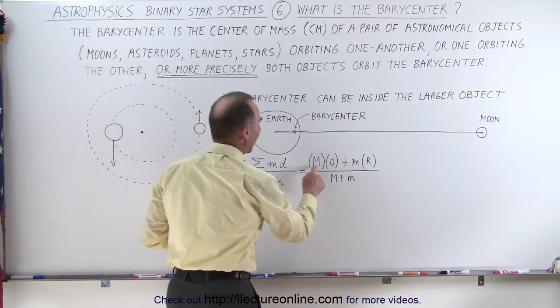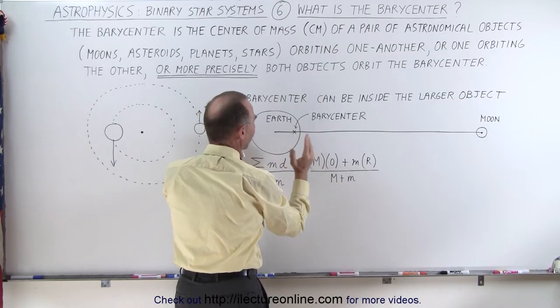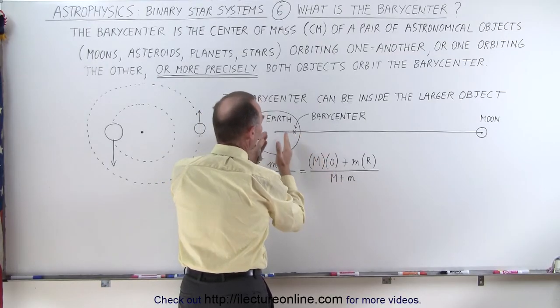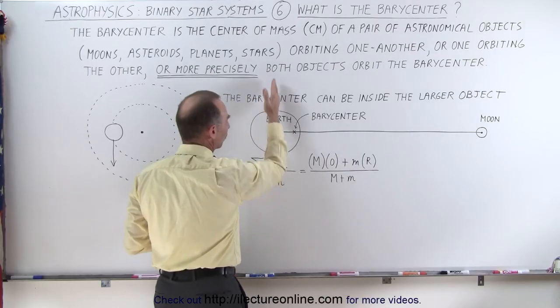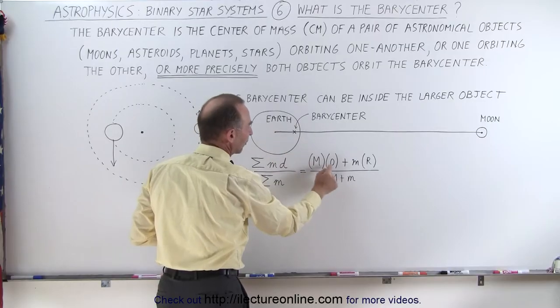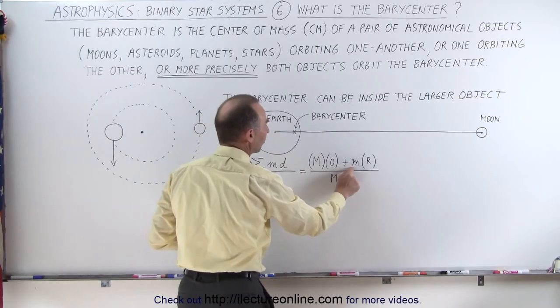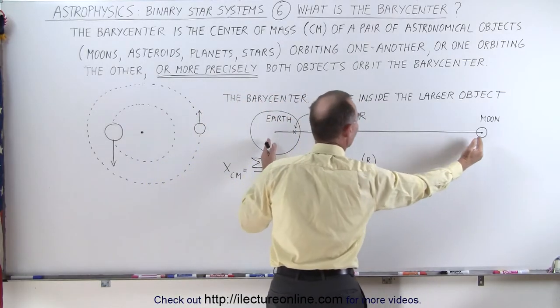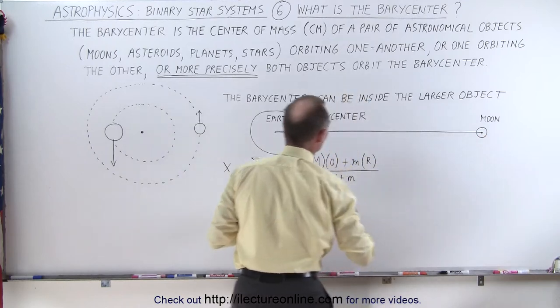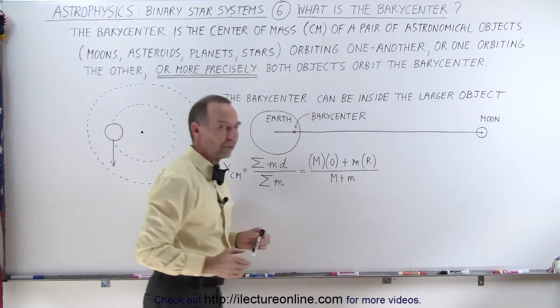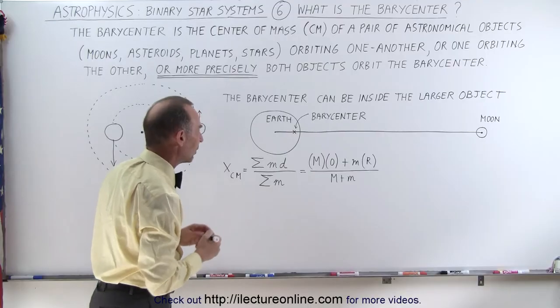We multiply the mass of one object times a distance from a specific origin. Let's put the origin right at the center of the Earth. Therefore, the distance from the Earth to the center would be zero, plus the mass of the Moon times this distance, the radius of the orbit, divided by the mass of both objects. Let's plug in some values and see what we get.